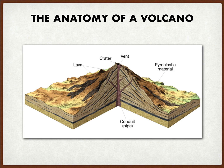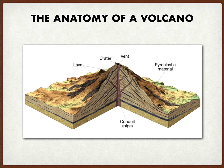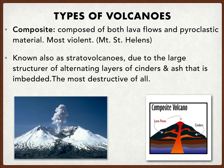Here's a diagram showing the conduit, the crater, the vent, the lava, and additional pyroclastic material built up on the side. If you were to think of the three names — composite, cinder, or shield — which one would you think this is? This one would be a composite volcano. As you can see, there are multiple layers that have been layered on it. Composite volcanoes are composed of both lava and pyroclastic material, and they end up being the most violent.